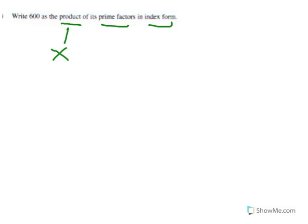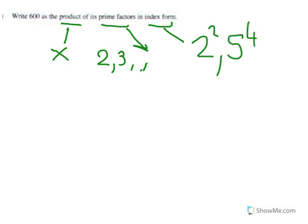Product in maths means multiply. Prime factors are prime numbers. We'll talk about those in a second. That's 2, 3, and so on. And factors, numbers which divide into any number and give a whole number answer. Index form, things like 2 squared, 5 to the power of 4, things like that.